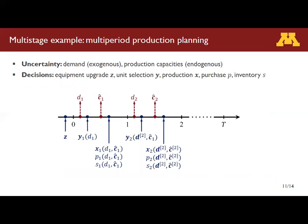The second example is a multi-period production planning problem. Again, demand and production capacity are the uncertain parameters, but the sequential decision-making process is more complex. Before the beginning of the scheduling horizon, we have the option to upgrade some of the production units. Y_i is one if unit i is upgraded, and upgrading also changes the uncertainty set for capacity. At the beginning of each period, we observe the demand over that period before deciding which units to run. Once we run a unit, we can observe its capacity. Based on that, we can determine how much to produce, how much to purchase externally, and the resulting inventory. This repeats until the end of the scheduling horizon.